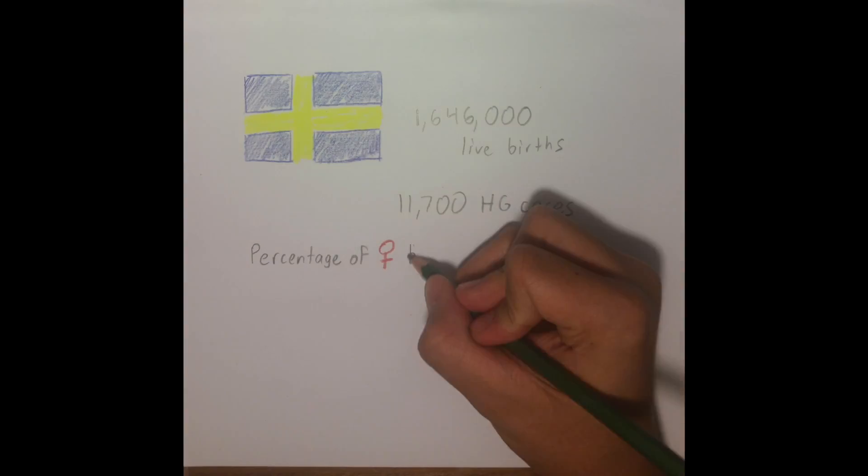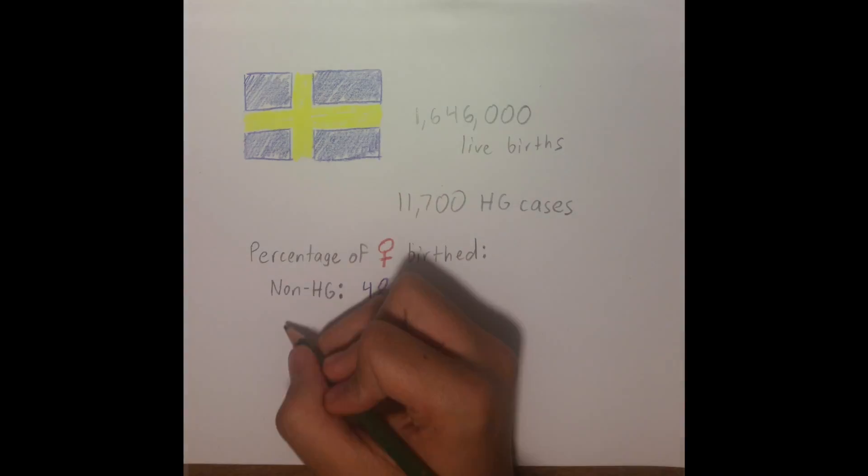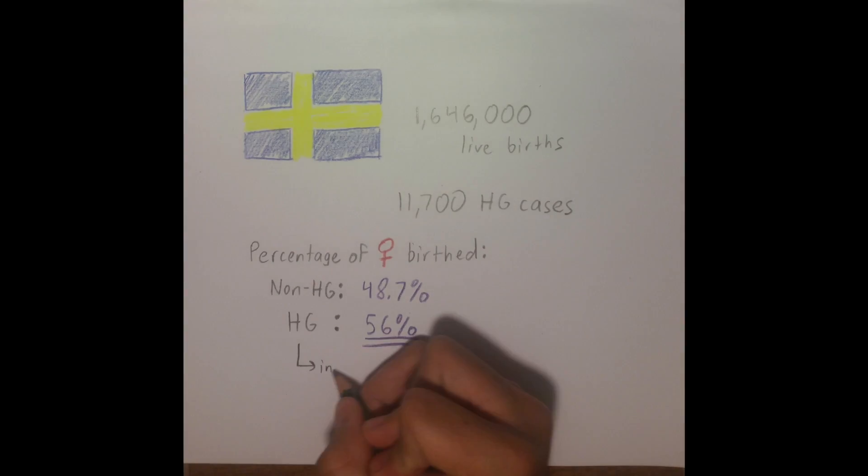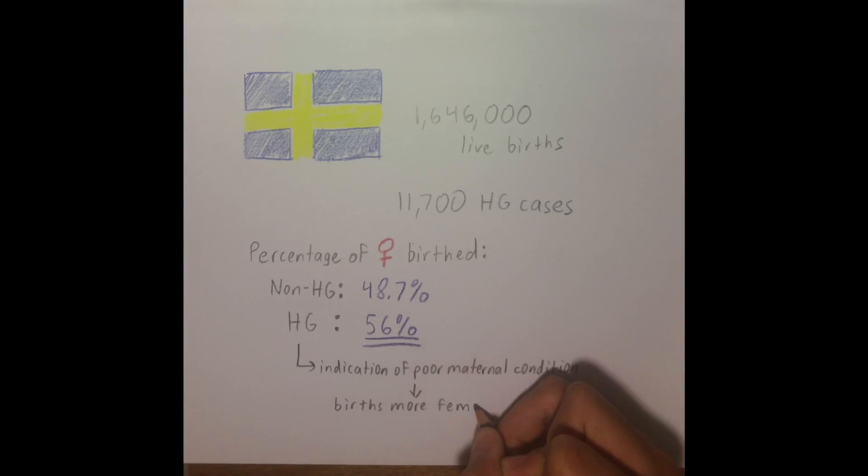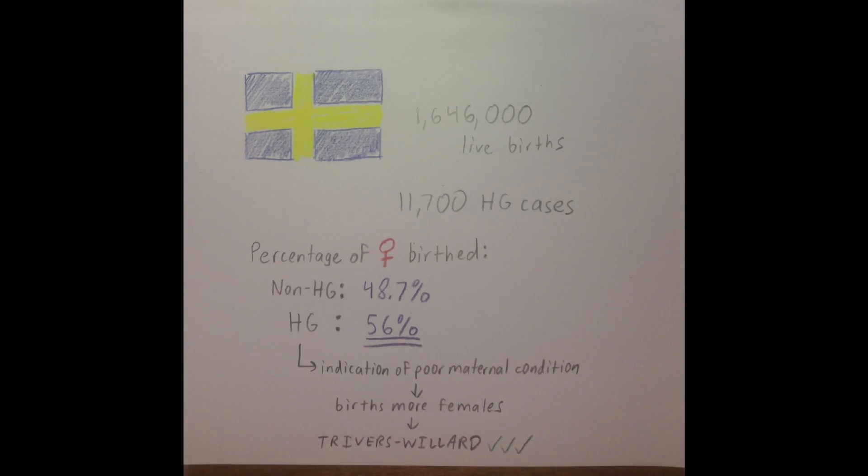The study found that the percentage of girls' birth increased from 48.7% to 56% for HG cases diagnosed in the first two months of pregnancy. With HG as an indication of poor maternal condition and HG cases resulting in a tendency to produce girls, this study supports the Trivers-Willard hypothesis for humans.